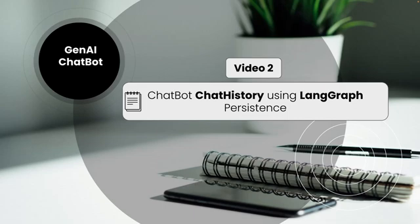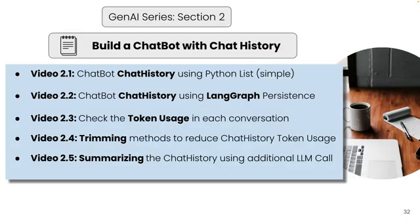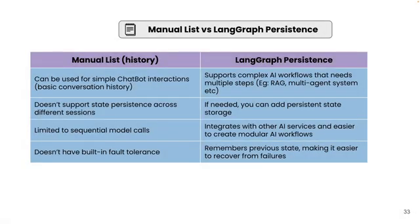Hello everyone, welcome to the second video on building a chatbot with chat history using LLM. In the first video we saw how to enable chat history using a Python list, and we did a comparison of that manual Python list append method and LangGraph persistence. Manual list can be used for simple chatbot interactions and basic conversation history, but it doesn't support state persistence across different sessions and is limited to sequential model calls.